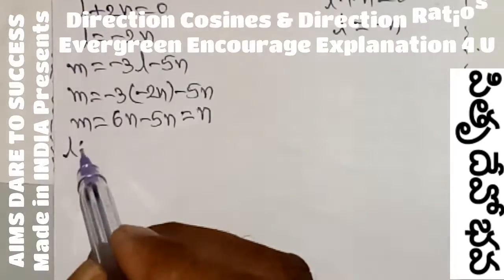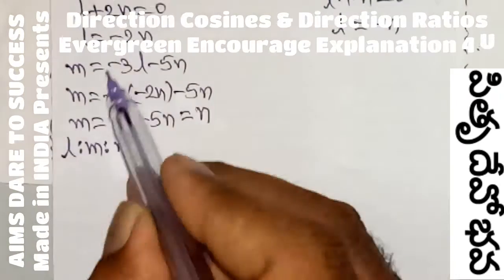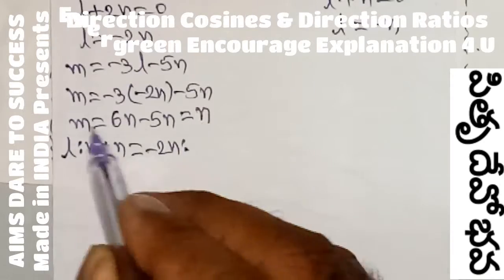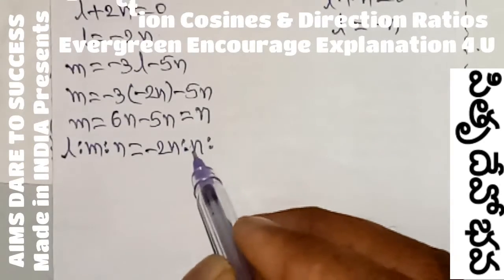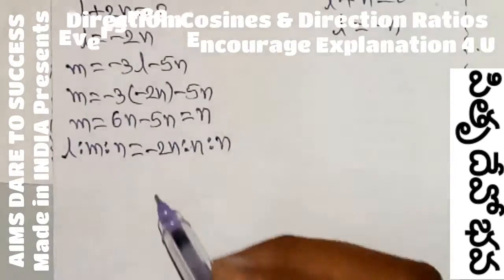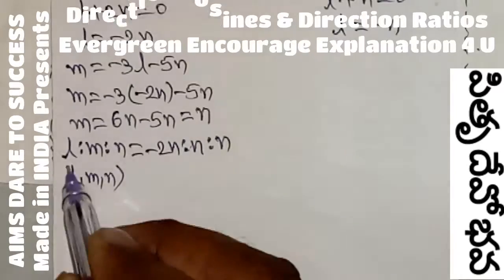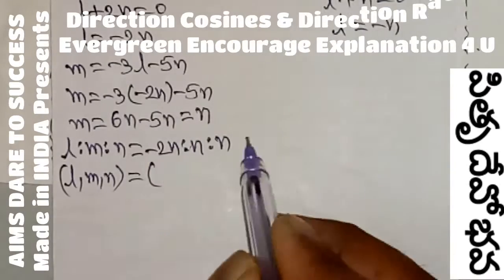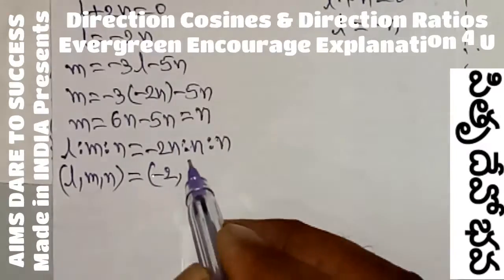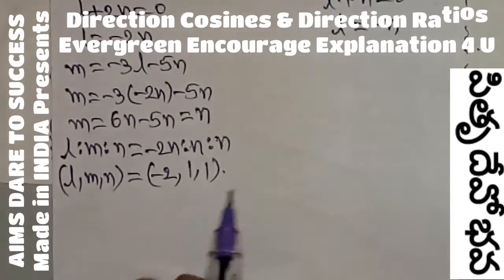So here I want to write L is to M is to N values. L value is minus 2N and M value is N. So these two values are in terms of N. So L is N — common N gets cancelled. I want to write L comma M comma N values. After cancelling N, the coefficients are minus 2 comma 1 comma 1. So this part is completed.